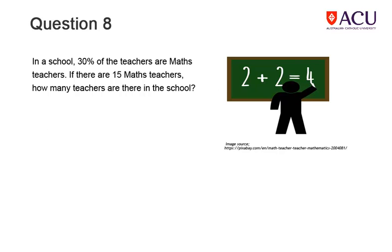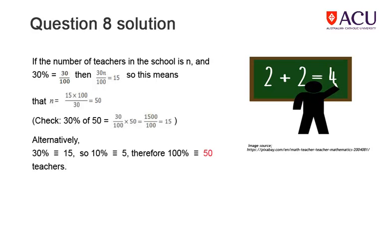The image of a maths teacher at the blackboard complements this question. Read the question, work out your answer, and then write it down. One solution involves a bit of algebra, as shown on the slide. Another option is to use the 10% rule: if you take one-third of the 30%, that is 15 teachers, then one-third of 15 gives 5. So 10% of the teachers is 5, and therefore 100%, which is 10 times 10%, must be 10 times 5, which is 50.